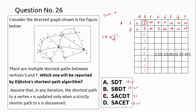After processing B, the remaining values are: A=4, C=infinity, D=7, others=infinity. Minimum is 4, so S to A = 4 is confirmed. Now process A's neighbors. S to C via A: S-A=4, A to C=1, so 4+1=5. Previously infinity, so update to 5.